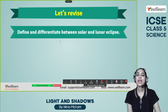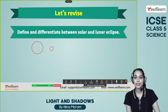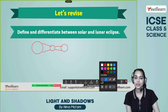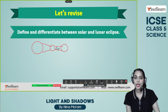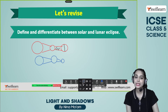Let's revise. Define and differentiate between solar and lunar eclipse. For solar eclipse: the sun is here, the moon is here, and the earth is here — they are aligned. The moon prevents the light from the sun from reaching the earth and casts a dark shadow on the earth. That is known as the solar eclipse. For lunar eclipse: the sun is here, the earth comes next, and then the moon. The earth prevents the light from the sun from reaching the moon and casts a shadow on the moon, which is known as the lunar eclipse.